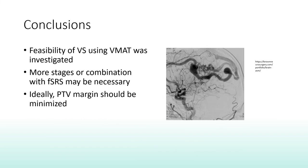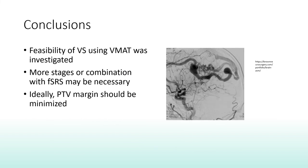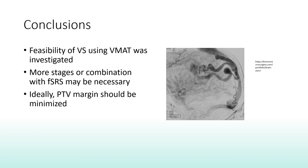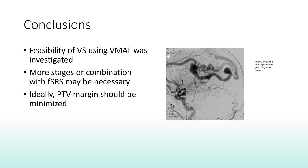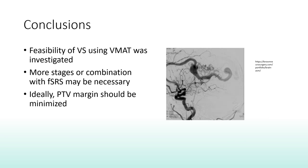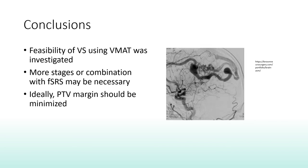To conclude, we believe volume staging is feasible using VMAT. Additional stages may need to be considered for AVM volumes of up to 20 cc, and it may need to be combined with fractionated SRS for best normal brain sparing. Ideally, minimizing the margin required could lead to improving both fractionated SRS and volume staging. These may require technical advances in LINAC mechanical accuracy and a stringent quality control program.